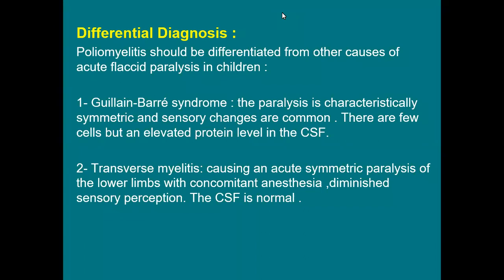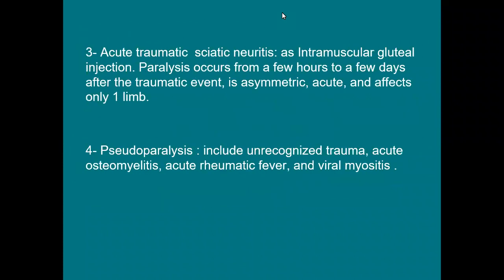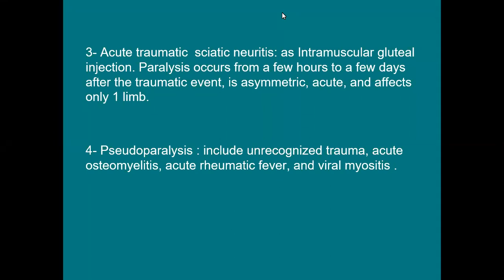Another cause of acute flaccid paralysis is transverse myelitis, which affects the spinal cord. It presents with acute, symmetrical paralysis involving both limbs with concomitant anesthesia and diminished sensory perception. CSF here is normal. Another differential is acute traumatic sciatic neuritis following injection, occurring a few hours to a few days after a traumatic event, typically asymmetric and affecting one limb.